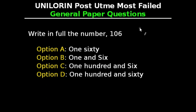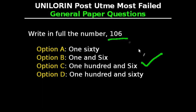General Paper Questions. This question says: Write in full the number 106. Option A: 160, Option B: 1 and 6, Option C: 106, Option D: 160. The correct answer to this question is 106, and this number is pronounced one hundred and six. So this is the correct answer.